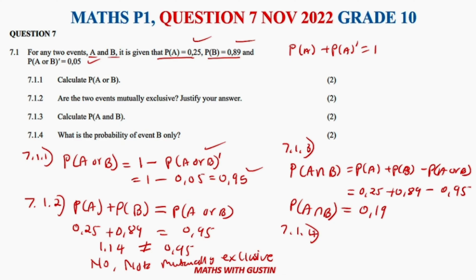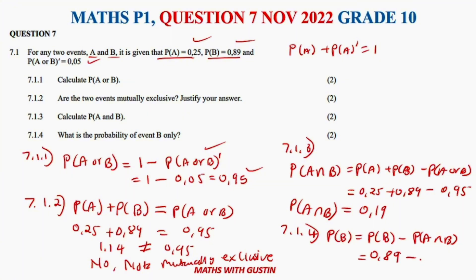Question 7.1.4 asks: what is the probability of event B only? Since A and B are not mutually exclusive, we use: P(B only) equals P(B) minus P(A and B) — we remove the intersection. So 0.89 minus 0.19 gives us 0.70 as the probability of B only. That's how you deal with this type of probability question.